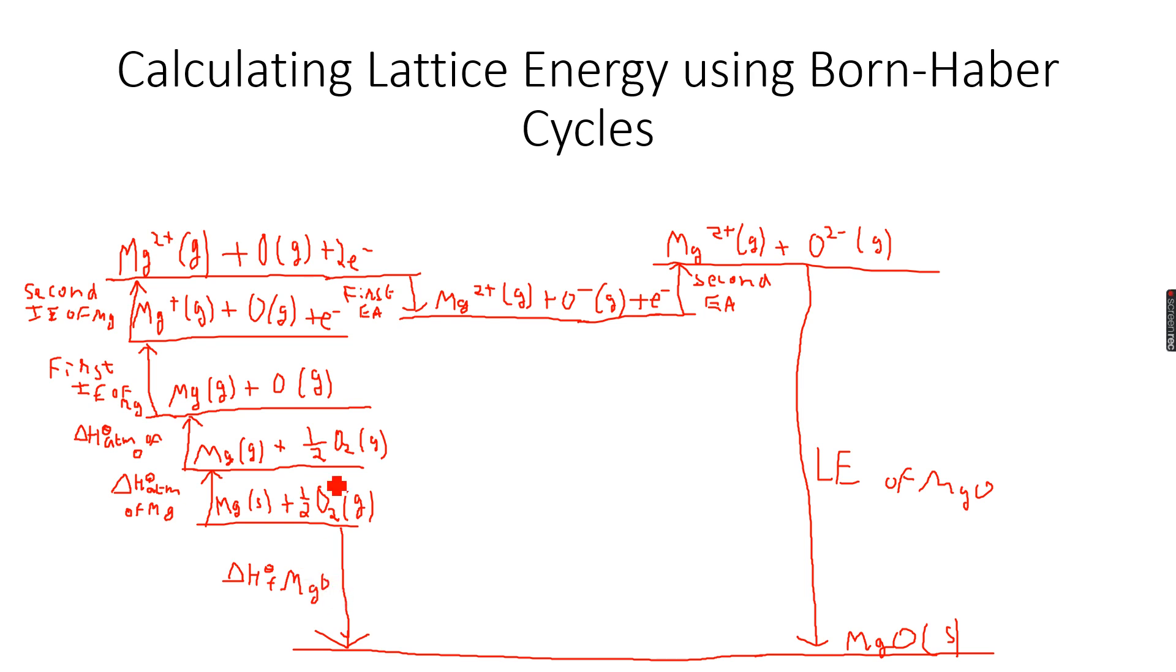So this is the Born-Haber cycle. So the important thing, the difference that we did over here was that the first electron affinity, first we went down because energy is released. So it will be a negative change. So it will go down. And then we go back up because energy is taken in again.